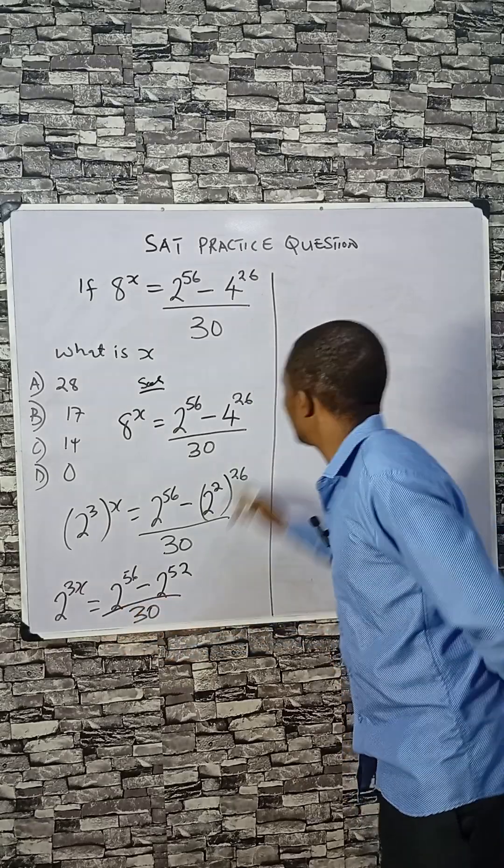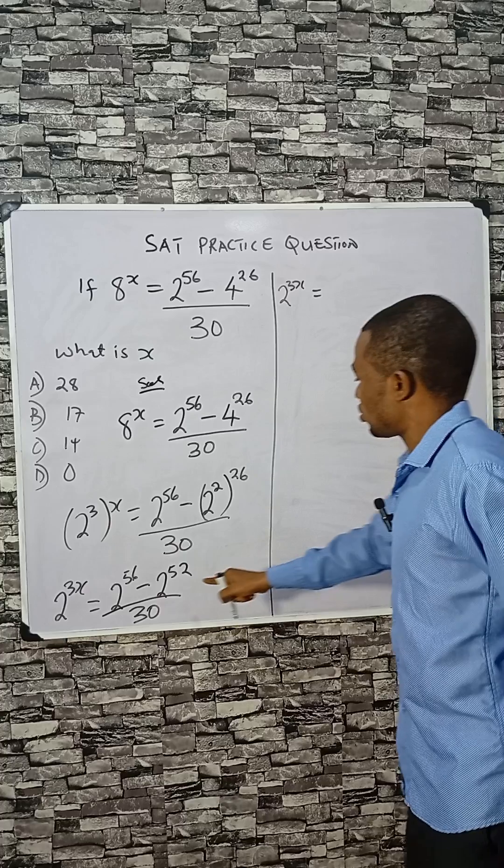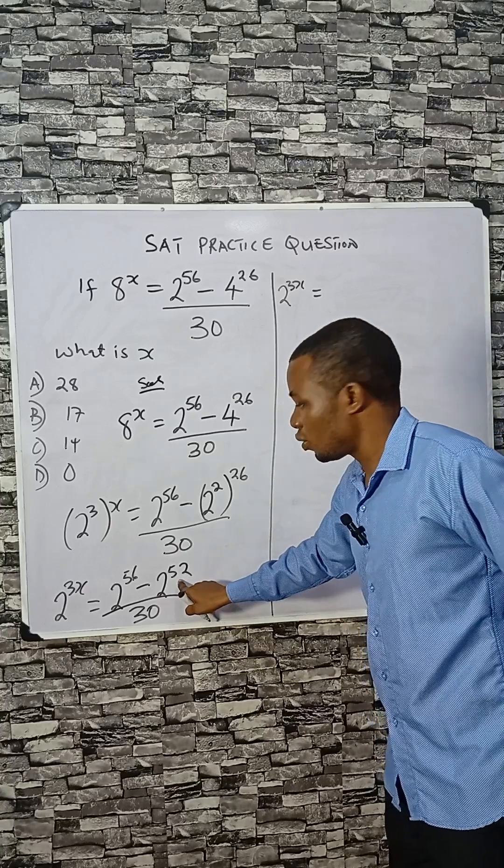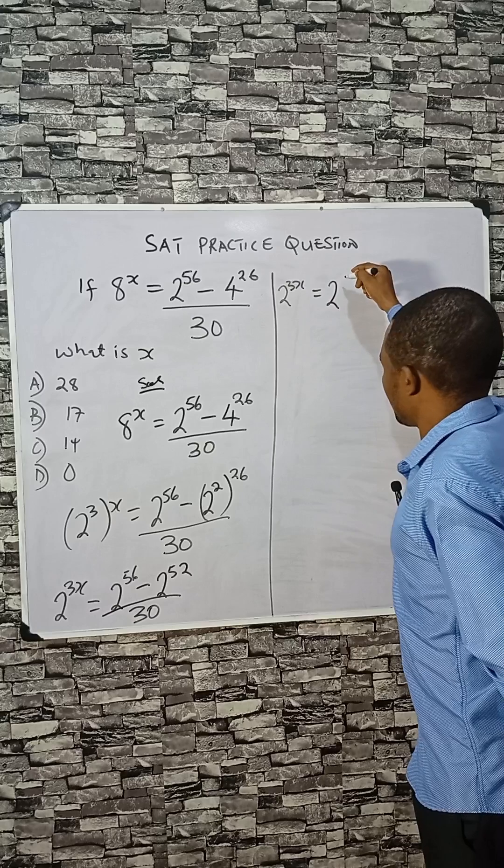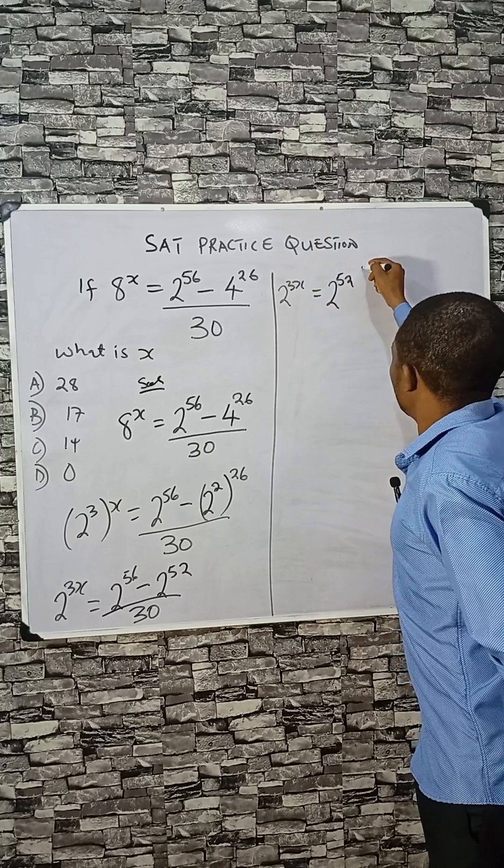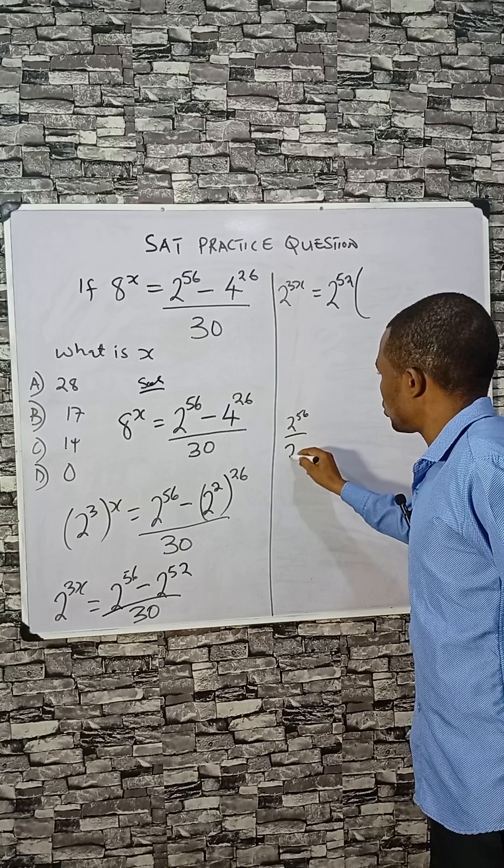Almost done. 2 raised to power 3x equals... we can factorize this, you see we can factor 2 raised to 52 out because it's common. Then 256 divided by 2...